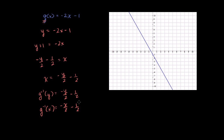Now let's graph it. Its y-intercept is negative 1 half, so it's right over there. And it has a slope of negative 1 half. If we start at negative 1 half and move over 1 in the positive direction, we'll go down half. If we move over 1 again, we'll go down half again. So the line will look something like that, keeping going in both directions. Now let's see if this really is a reflection over y equals x. And you can see they are reflections — if you reflect this blue line, it becomes this orange line.